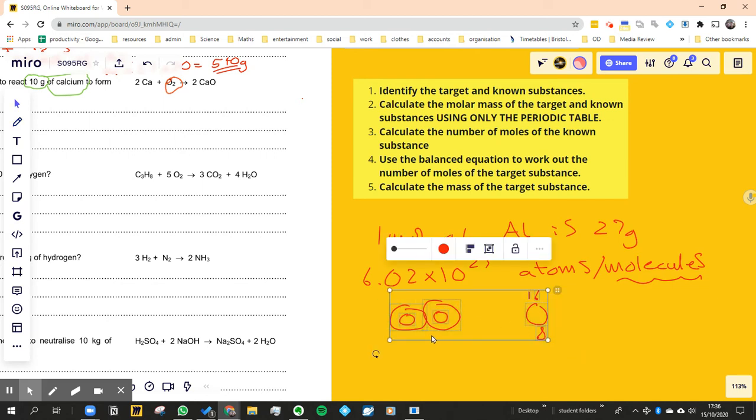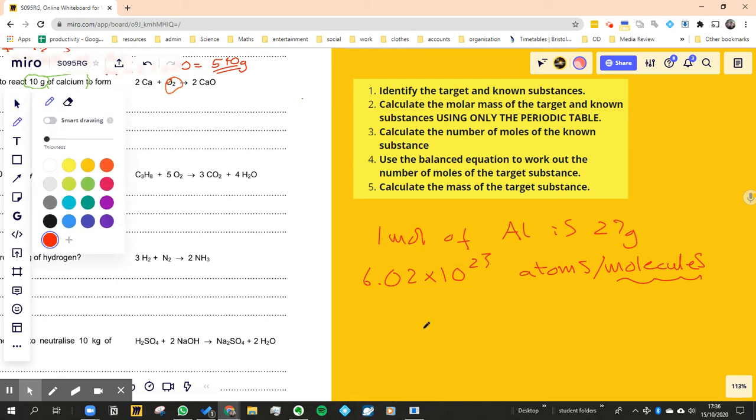The reason why it gets confusing is when we're looking at elements, you just think oxygen's an element, so I look at the periodic table and just read it off. If I told you what was the molar mass of water, you wouldn't do that, because water's not on the periodic table. So you would go, H2O.